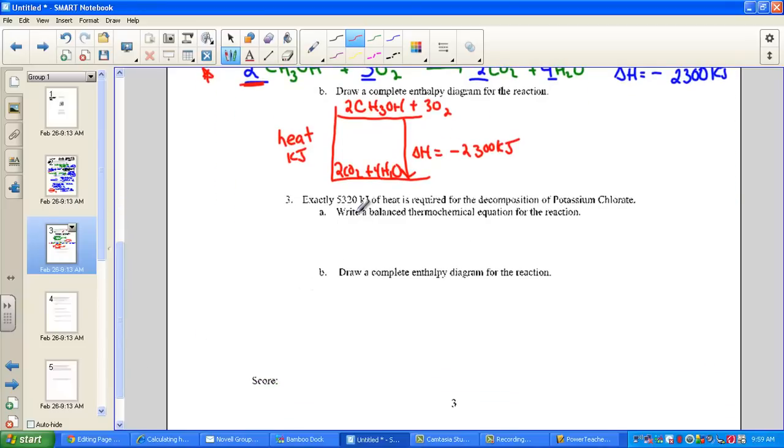Our third problem. 5320 kilojoules of heat is required for the decomposition of potassium chlorate. Let's write the thermochemical equation. Potassium chlorate is a white powder that will decompose upon heating. Helpful hint number four talks about chlorates and how they decompose. Metal chlorates decompose to give the metal chloride and oxygen gas. Here we have a chlorate turning into a chloride.